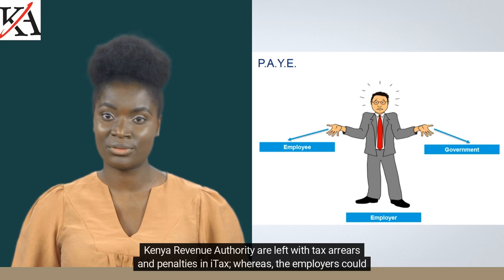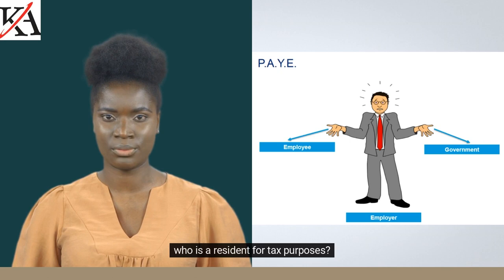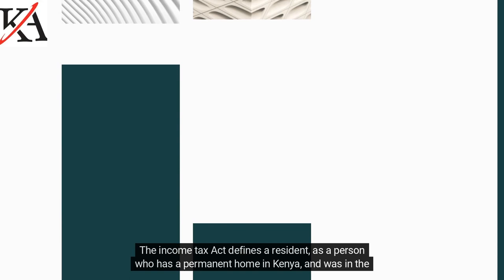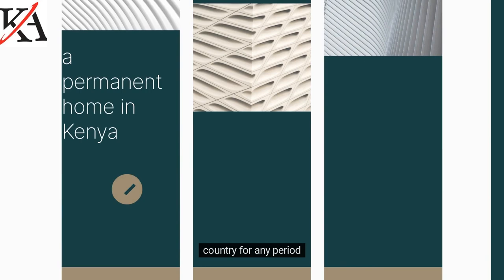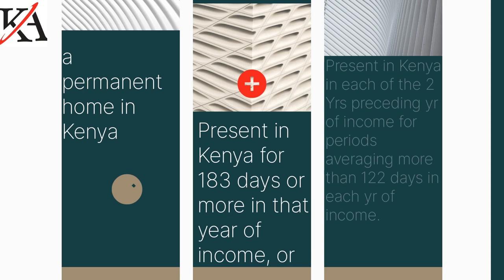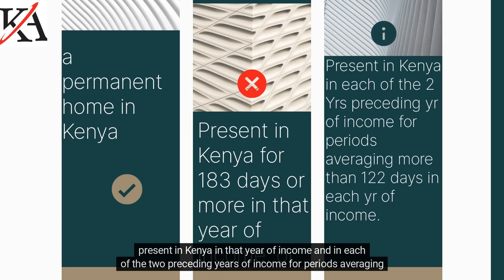So, who is a resident for tax purposes? The Income Tax Act defines a resident as a person who has a permanent home in Kenya and was in the country for any period; or a person without a permanent home in Kenya but was present in Kenya for 183 days or more in that year of income; or present in Kenya in that year of income and in each of the two preceding years of income for periods averaging more than 122 days in each year of income.